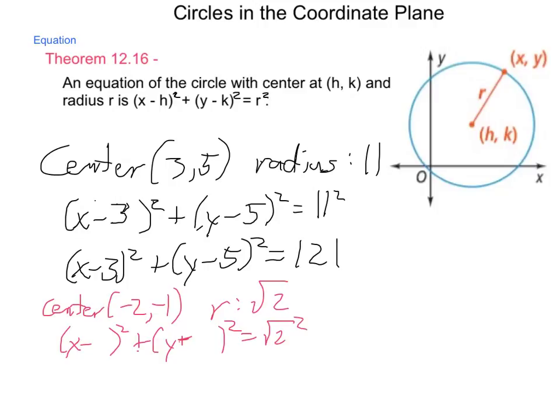Now, what's the x part of our coordinate? Well, the x part is -2, so we have x minus a negative 2. And then what's the y part of our coordinate? It is a negative 1, so we will have y minus a negative 1.